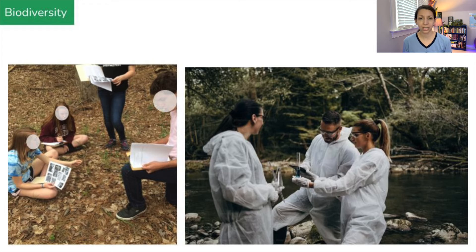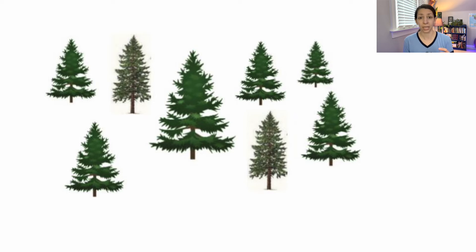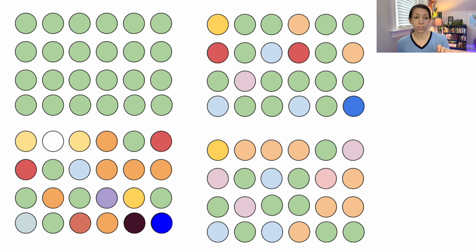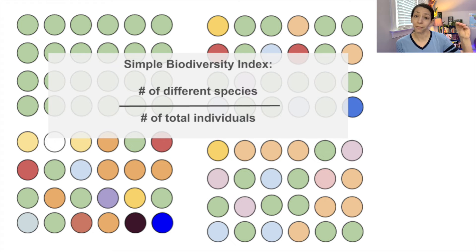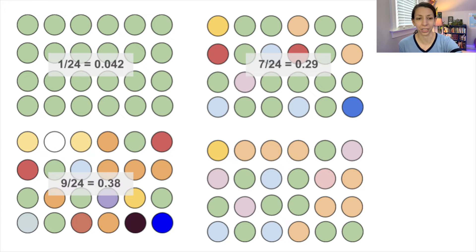There are many different ways to measure biodiversity. A biodiversity index is one way to quantify the levels of biodiversity in an area. Since we can't count every single species, scientists often use ecological sampling, using a portion that's representative of the whole ecosystem. Looking at hypothetical species represented by dots — every color represents a different species — in each of these ecosystems we have 24 different individuals. To calculate biodiversity, we take the number of different species and divide it by the number of individual organisms.